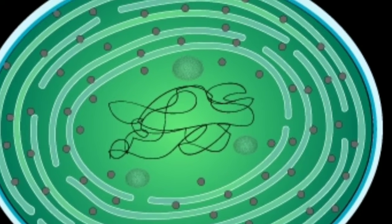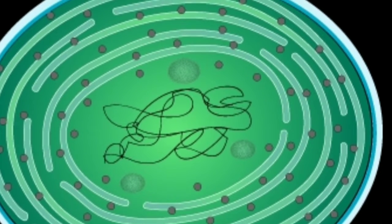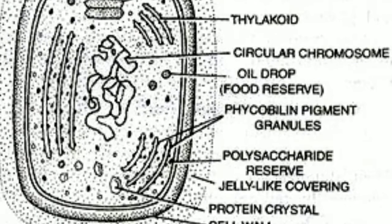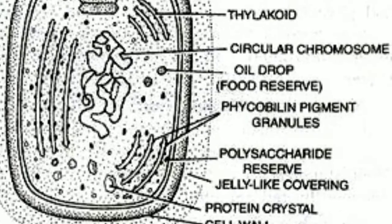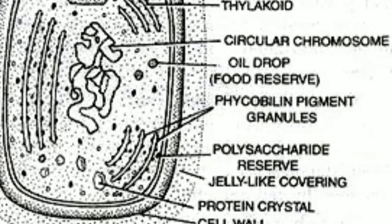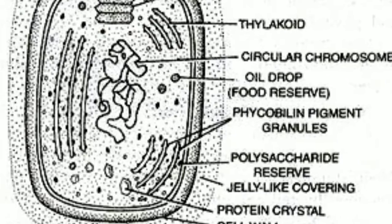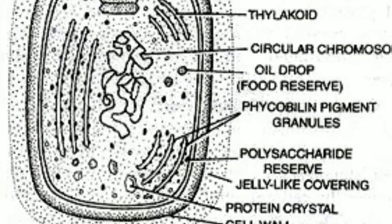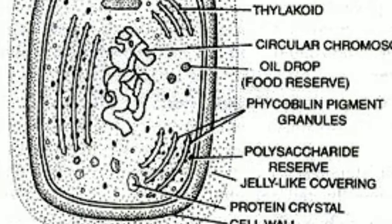In unicellular forms, distinct sheet is covered in individual cells. In filamentous form, common gelatinous sheet is present. This sheet is composed of a complex mixture which is formed of mucopolysaccharides and glucuronic acid.